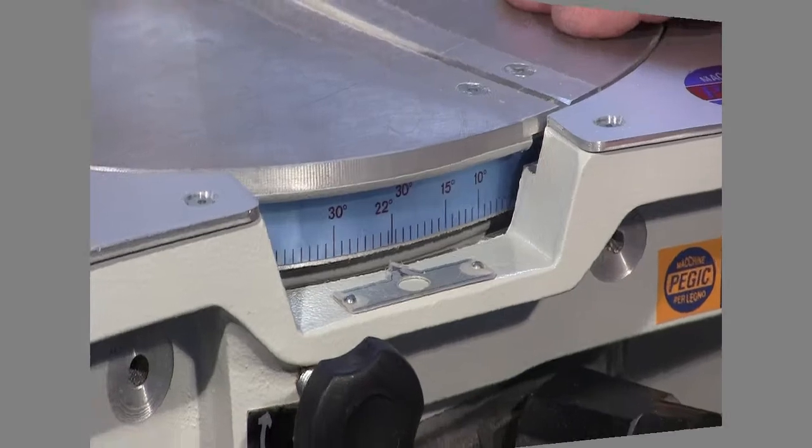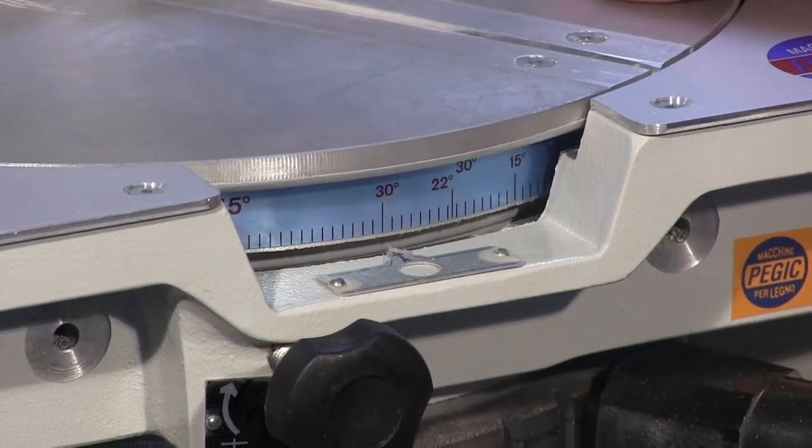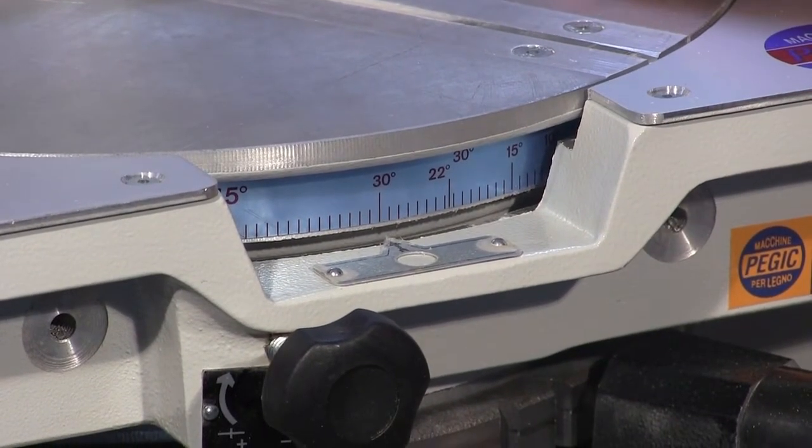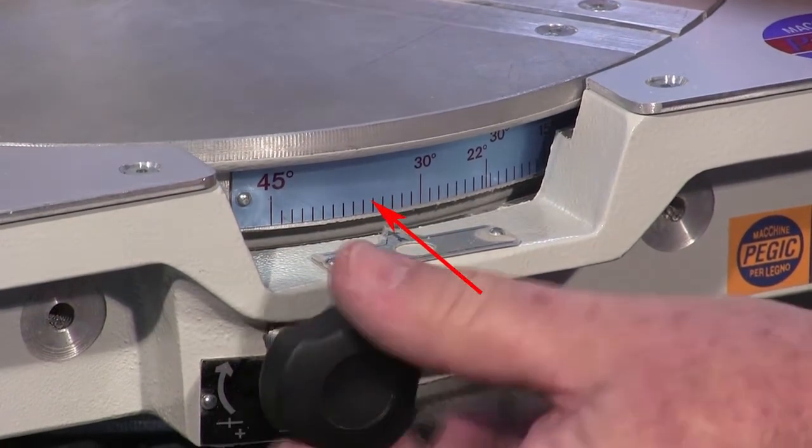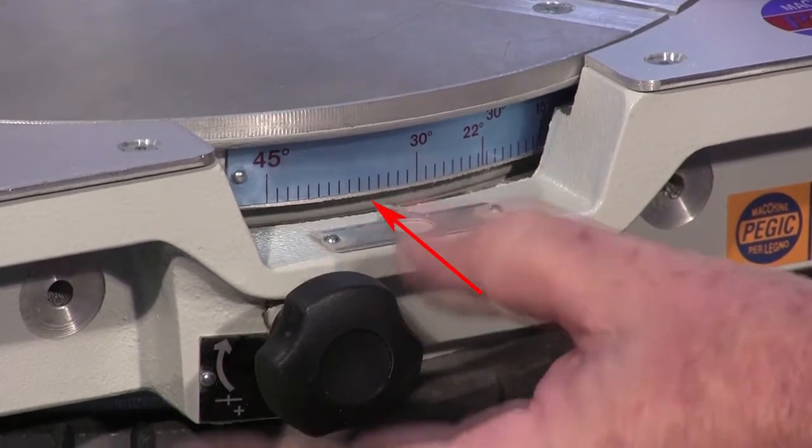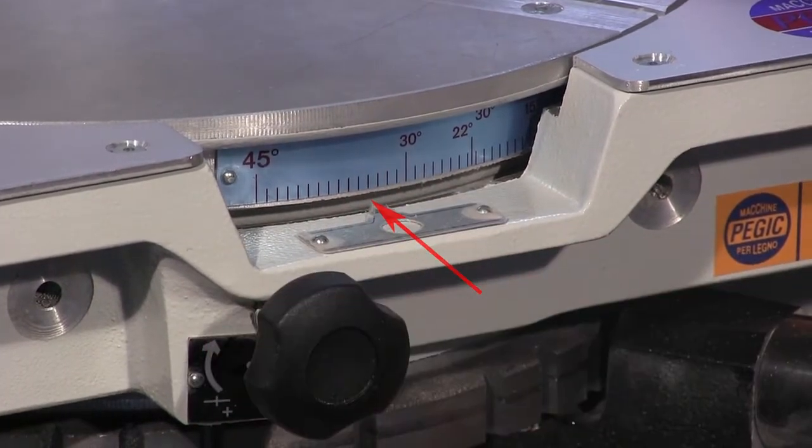Now I want a non-standard angle, for example a 35 degrees angle. I rotate the handle until it reaches 35 degrees. Now I lock the cutting table into position by screwing the black knob.